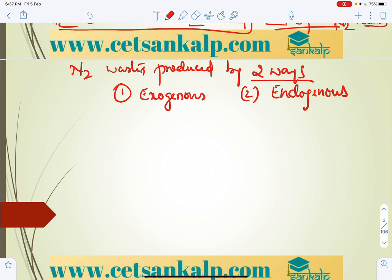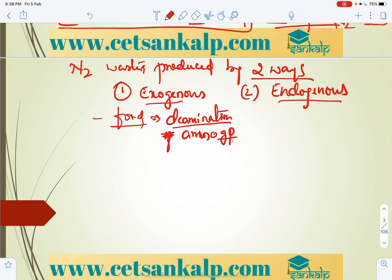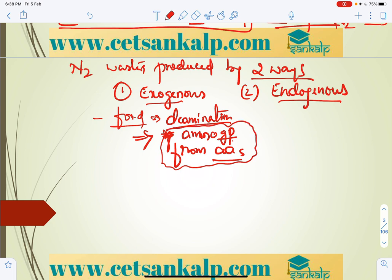Exogenous source means de-amination of excess or unwanted amino acids from food. De-amination is the removal of the amino group (NH2) from amino acids. Amino acids are the building blocks of proteins, and during de-amination, the amino group is removed from the amino acid structure.